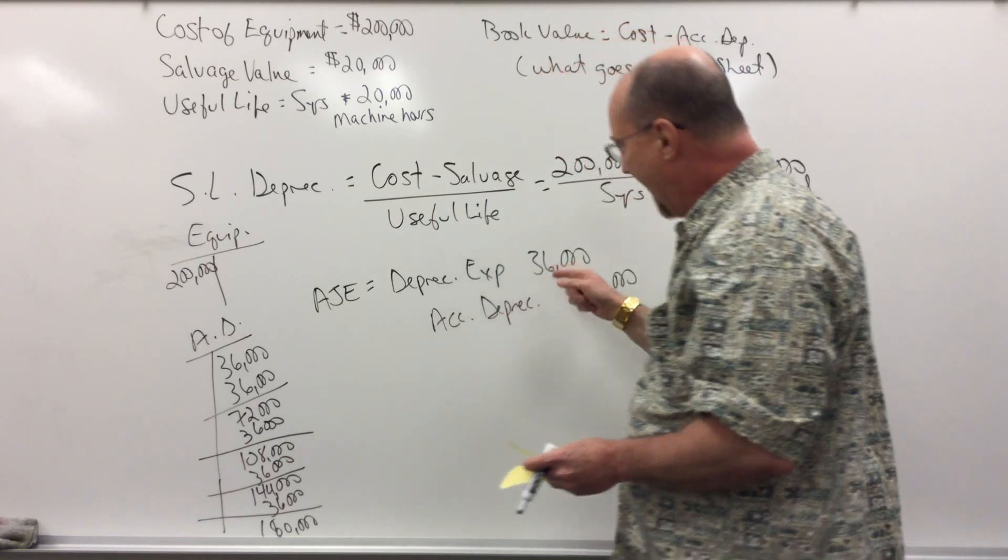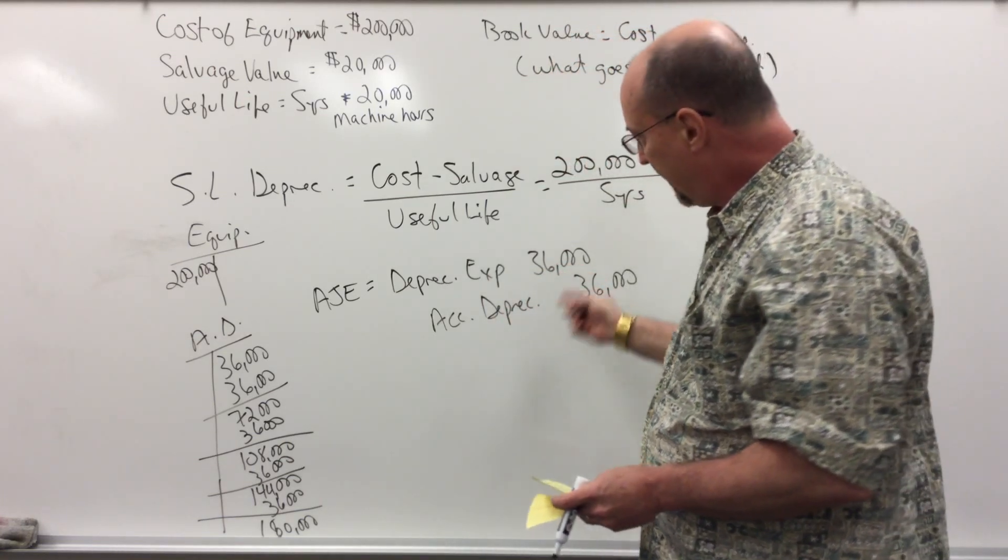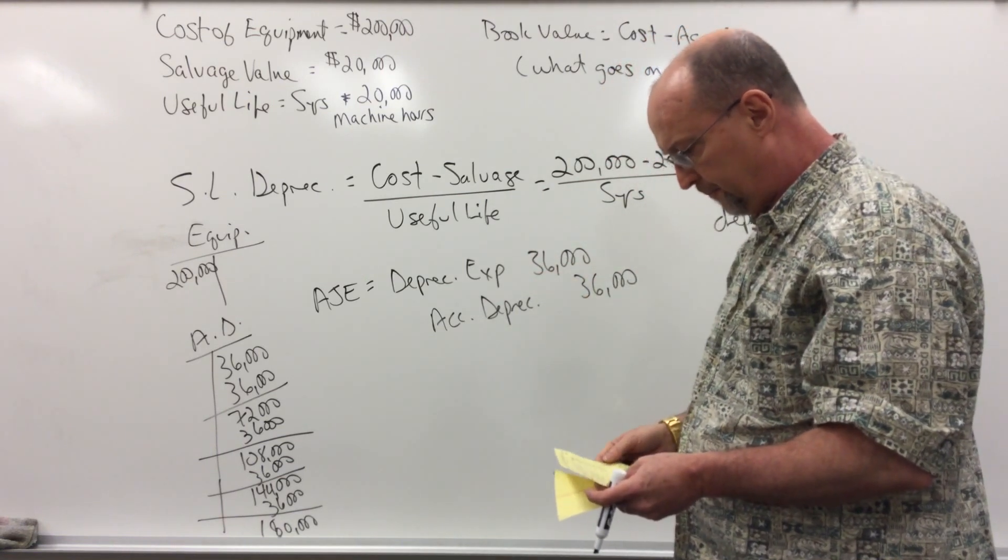Now, this was annual depreciation. If I wanted to record monthly depreciation, I would simply divide this number by 12, and you'd get $3,000 per month.